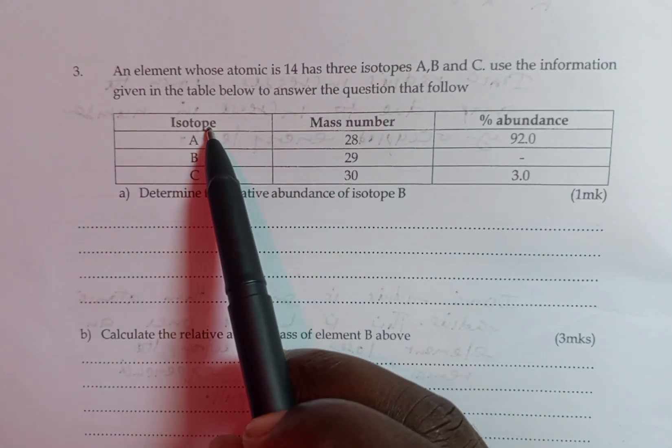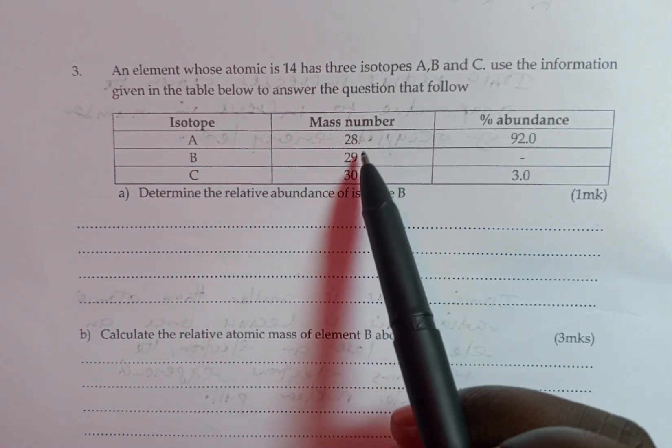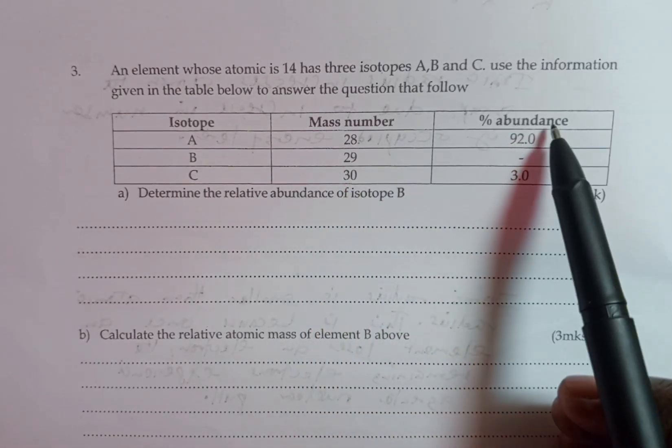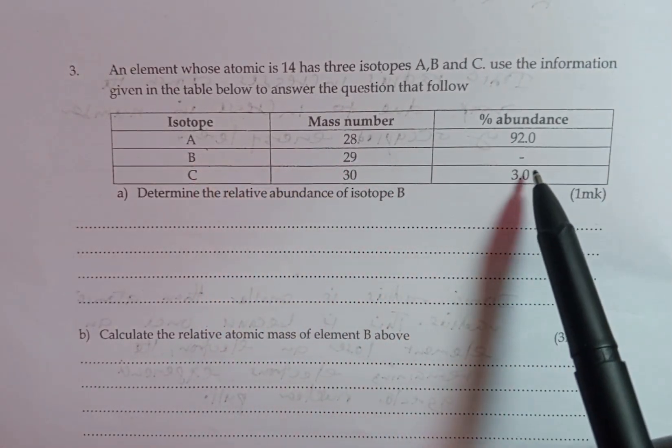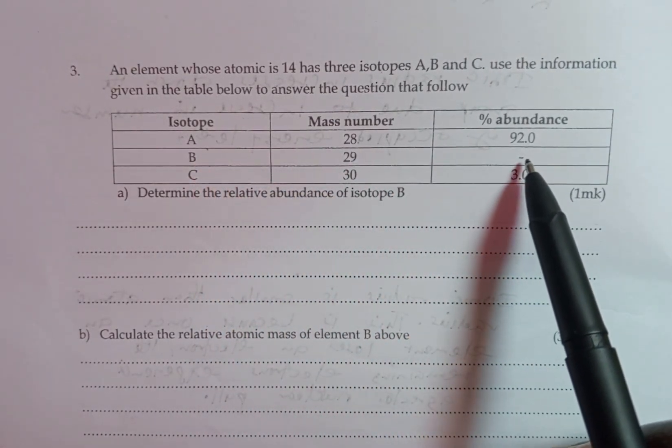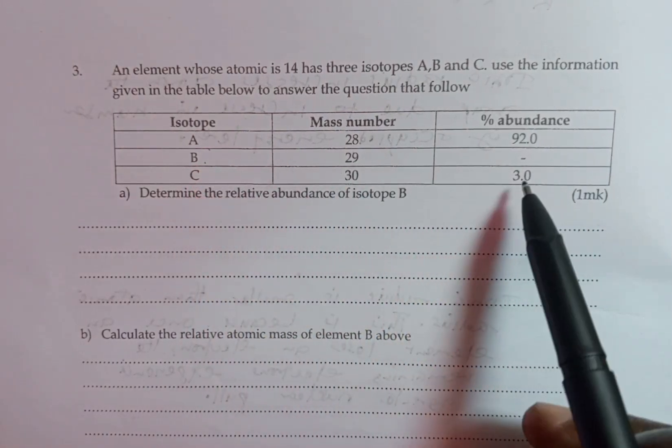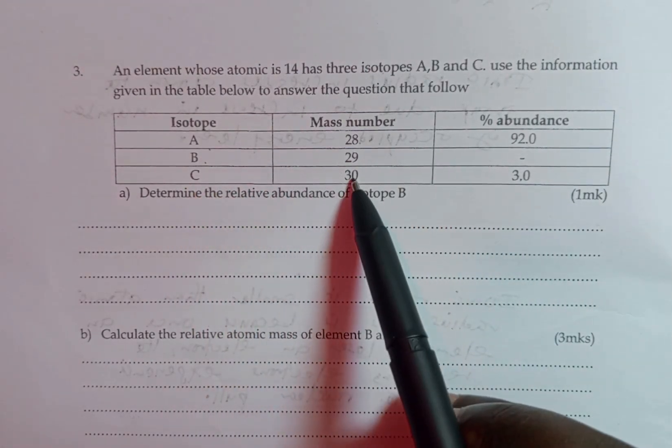So, we have isotope A, B, C with mass numbers 28, 29 and 30 with the percentage abundance of 92 for isotope A. We don't have the percentage abundance for isotope B. Then, of course, we have 3% for isotope C with a mass number of 30.